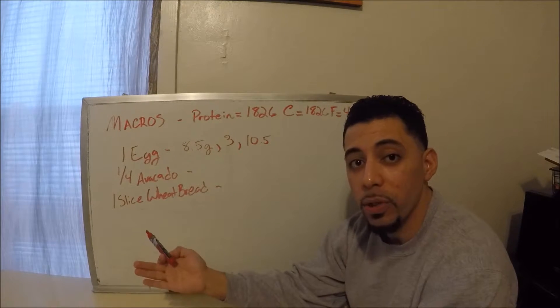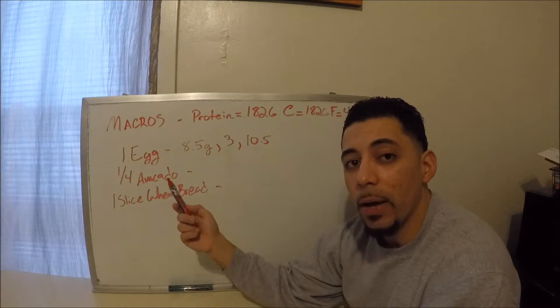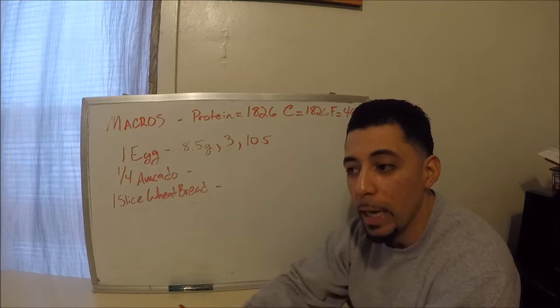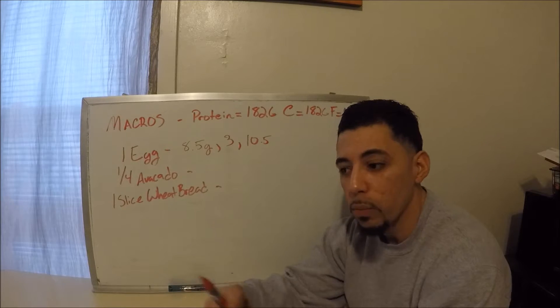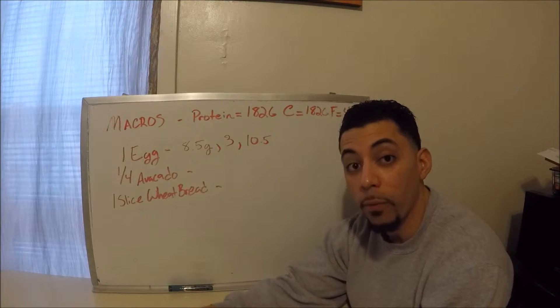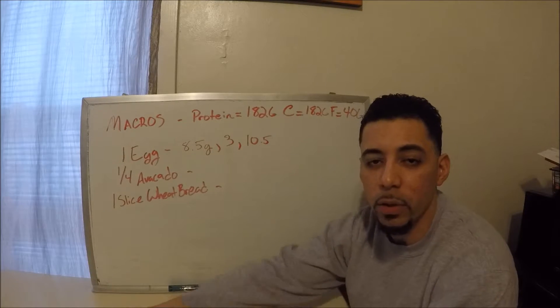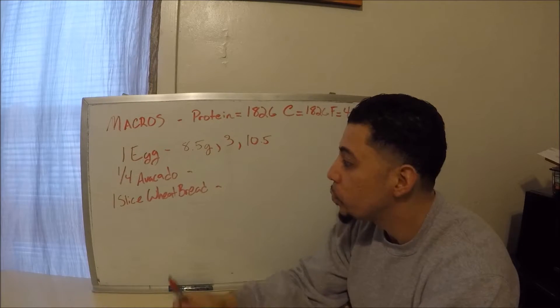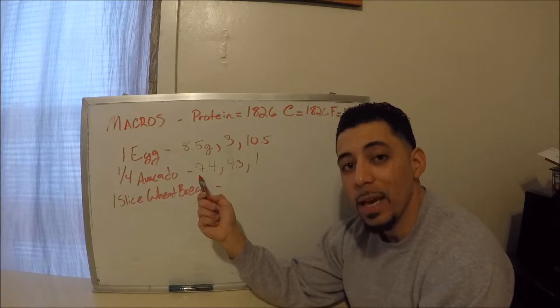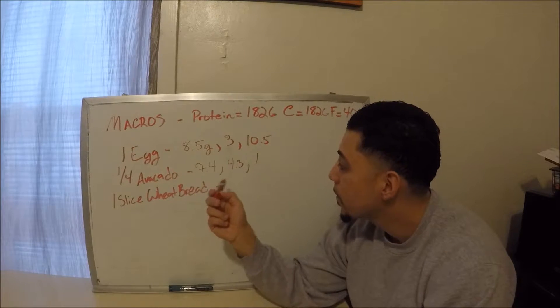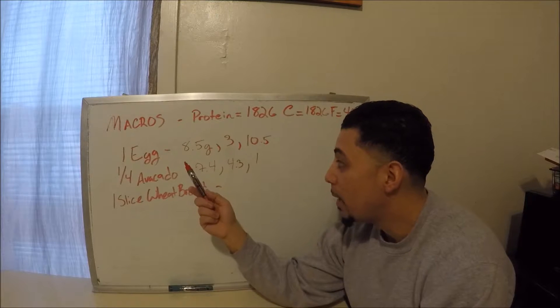One-fourth avocado. Now depending on what app you have, it'll give you the nutrition facts for one whole avocado, and obviously you just divide whatever the nutritional facts are for that avocado by four. So for one-fourth avocado based on the Fitbit app nutritional facts, we had 7.4 grams of fat, 4.3 carbs, and 1 gram of protein.